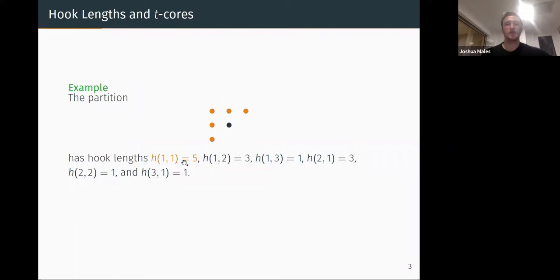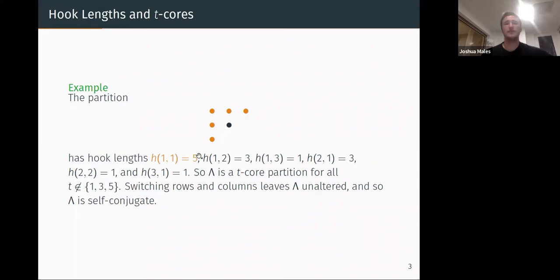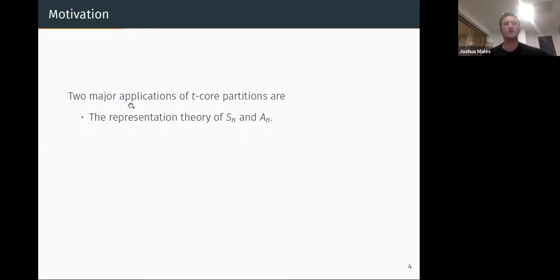If you go through this process for this partition, we have hook lengths of 5, 3, 1, 3, 1, and 1. So what does that mean? That means that this partition lambda is a t-core partition for all t that don't divide these numbers. So for any t not in 1, 3, and 5, this is a t-core partition. Even better for us is that switching rows and columns here leaves lambda the same. So lambda is a self-conjugate partition. In particular, this is an example of a self-conjugate 7-core of the number 6.